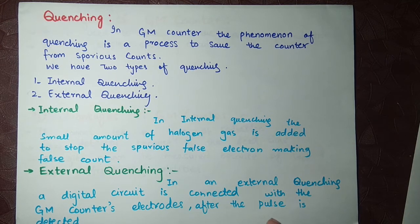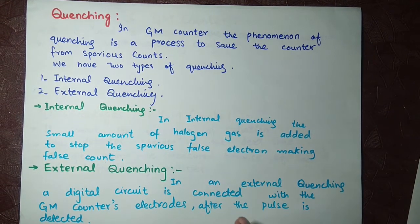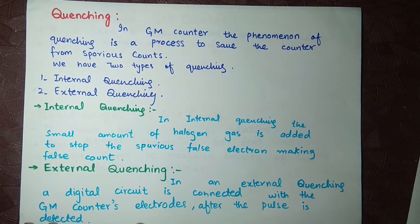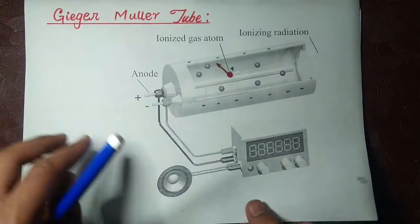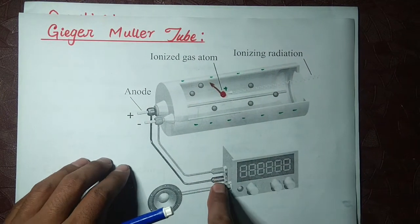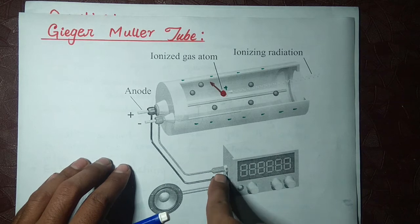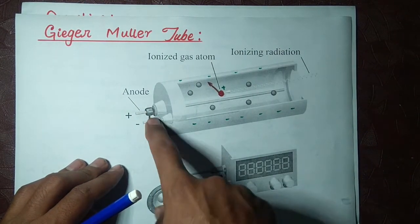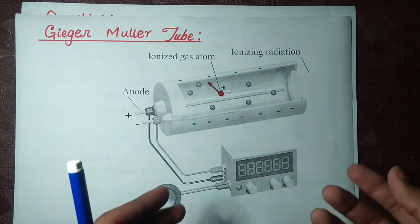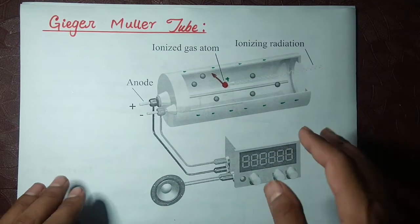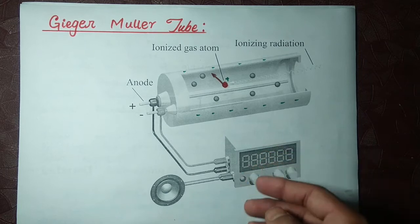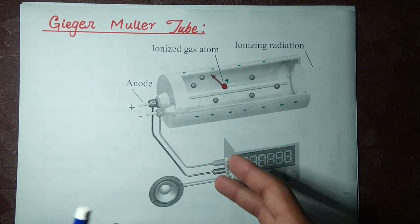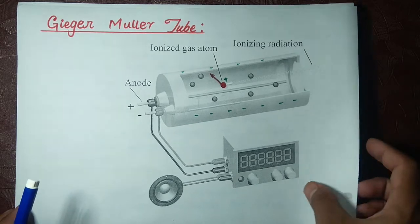In external quenching, a digital circuit is connected to the counter — connected to the GM counter tube electrodes. We can connect it at additional pins to add an external quenching system.